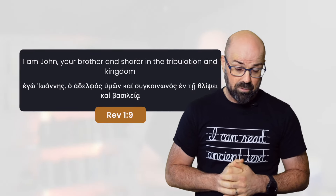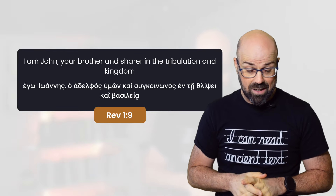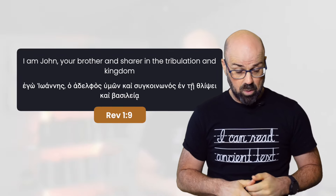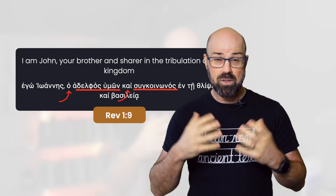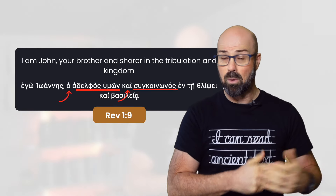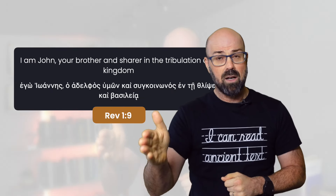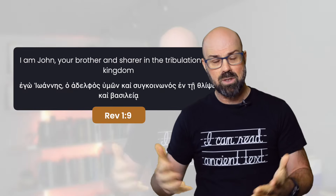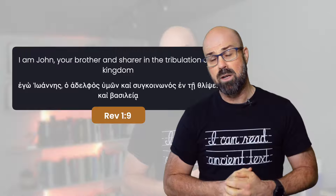Another example is in Revelation chapter 1 verse 9: 'I am John your brother and sharer in the tribulation and kingdom.' Here again we have 'your brother and sharer' — two substantives referring to the same person, namely John. Again we see article-noun-kai plus another substantive. This is an example of the Granville Sharp rule that nobody disagrees with.